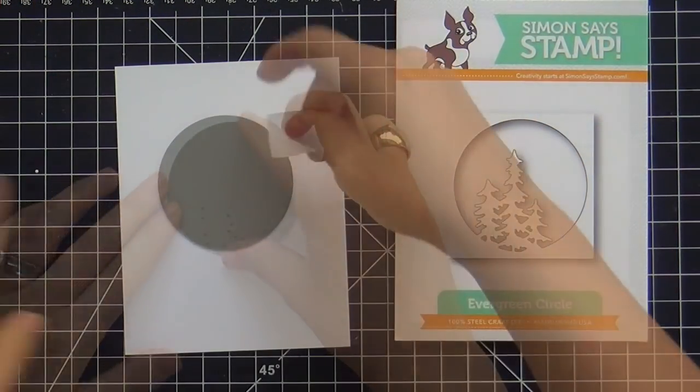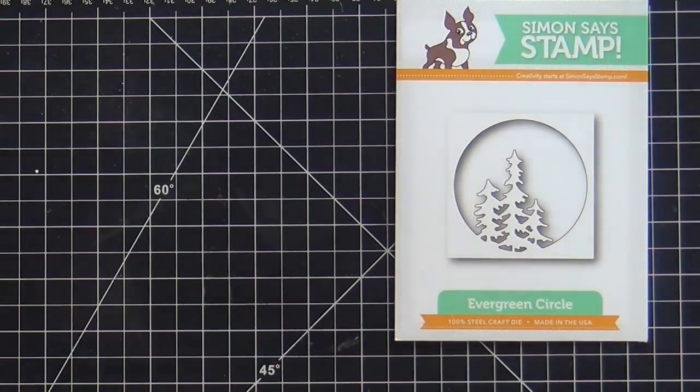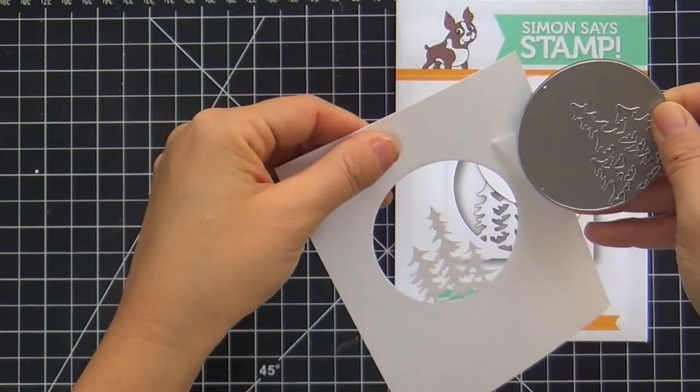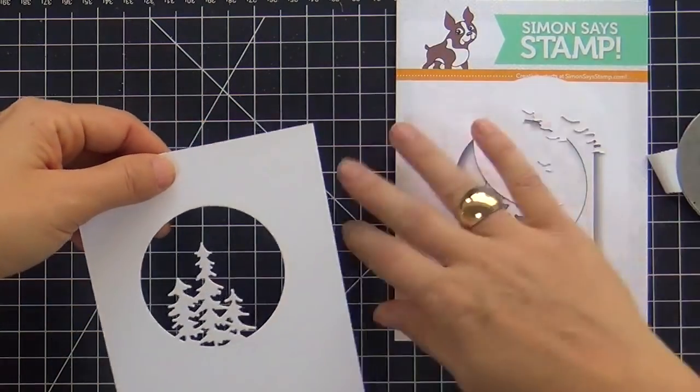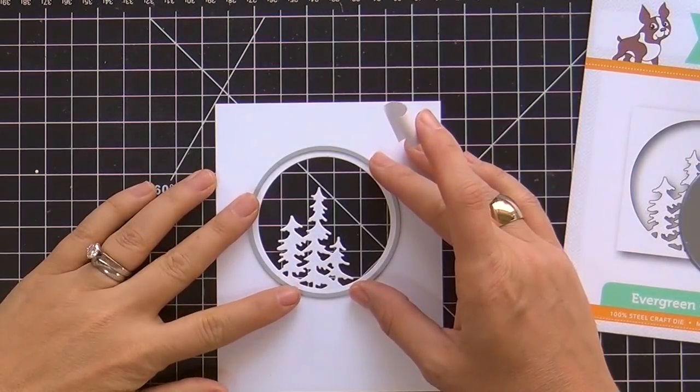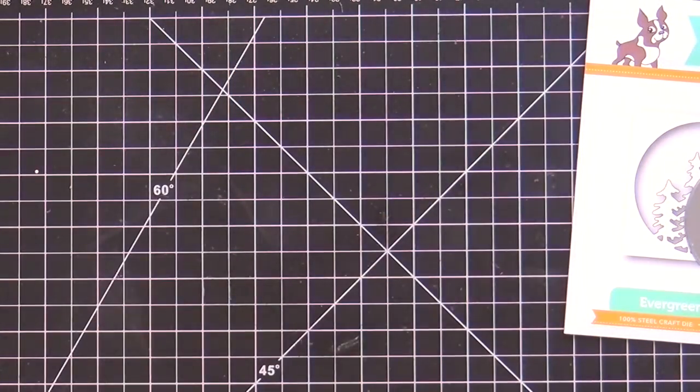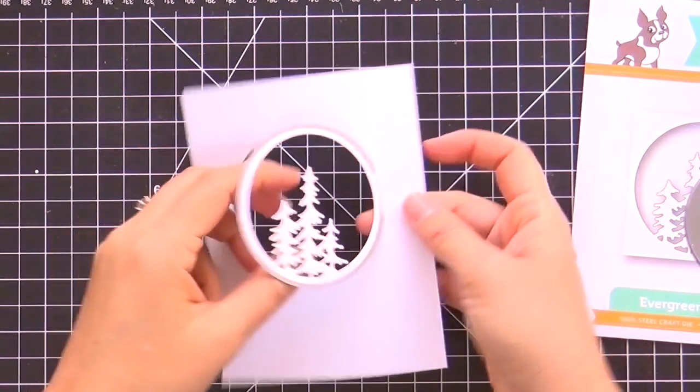So I'm starting with the evergreen circle die. Beautiful, gives you the negative and the positive which can both be used, but I'm going to focus on this negative part right here. I'm going to take a nested circle die and die cut that negative image right out.